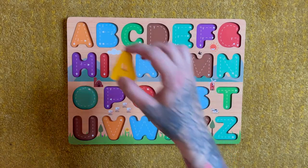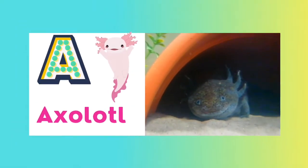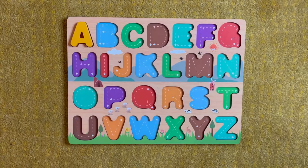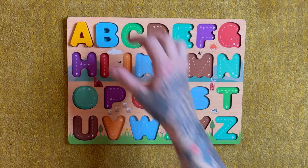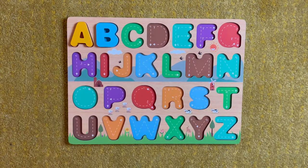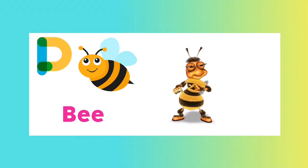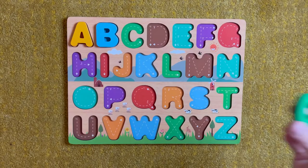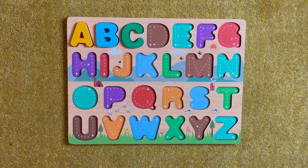A. A is for axolotl. B. B is for bear. C. C is for camel.